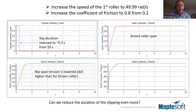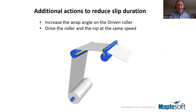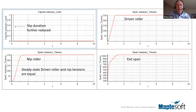What else could we do to reduce slippage? This is a lot easier to test in simulation than in reality — you wouldn't want to make an expensive machine change without knowing if it might work. So we simply changed the wrap angle on the initial roller to a much higher wrap angle and sped it up to match the nip roller. The slip duration is further reduced, the tensions in the two spans are now effectively equal, and the remaining slippage at the beginning is essentially just an inertial effect at the start of the simulation.